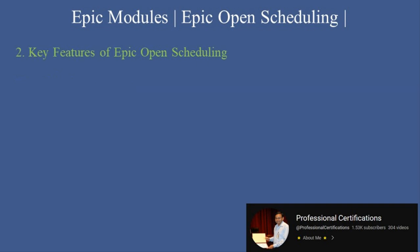Key Features of Epic Open Scheduling. Here are the features that make Epic Open Scheduling a valuable tool for healthcare organizations. 1. Self-scheduling: Patients can book their own appointments via the provider's website, MyChart, or other portals. 2. Real-Time Availability: Displays open time slots, ensuring patients see accurate and up-to-date options.